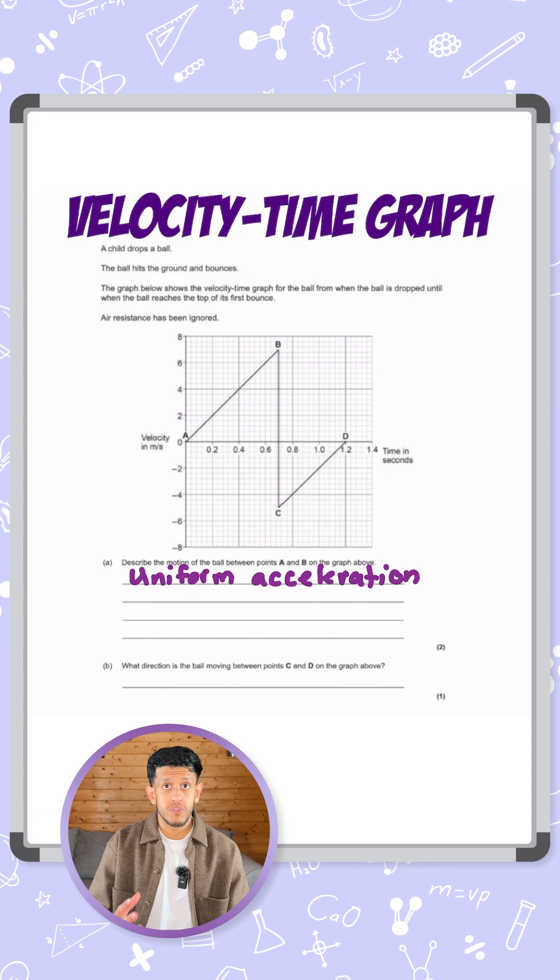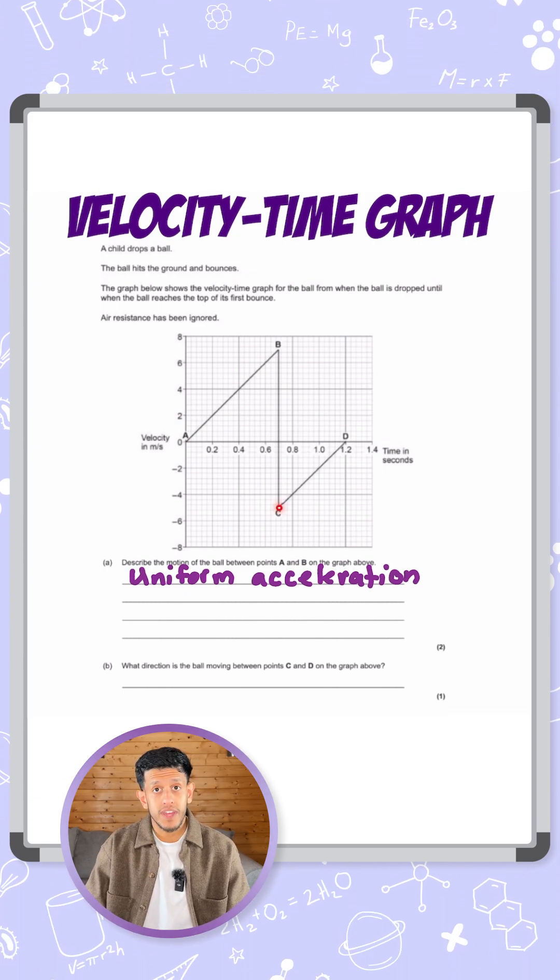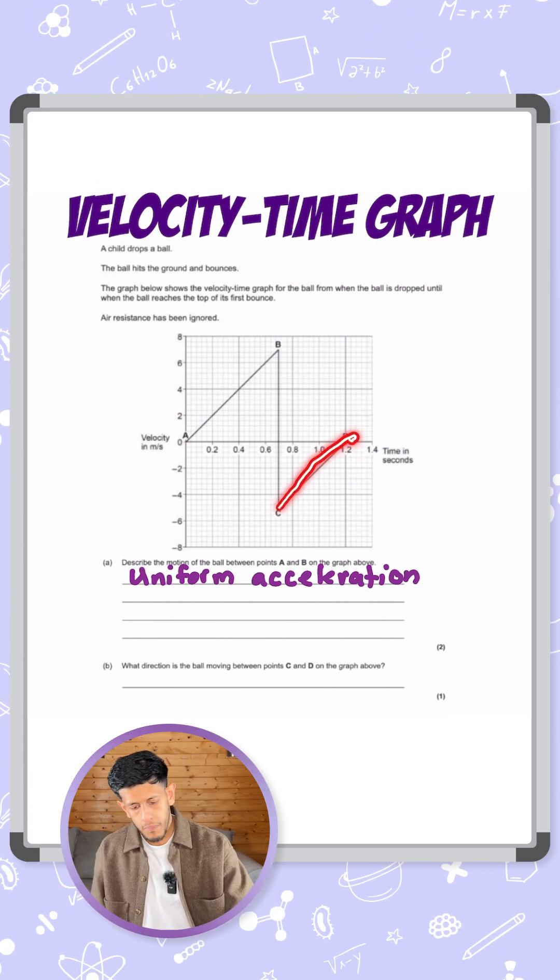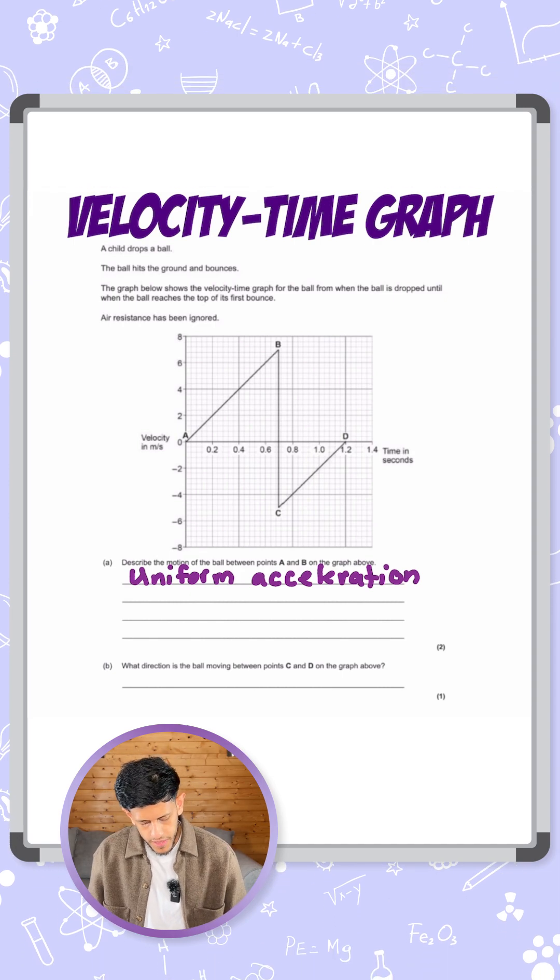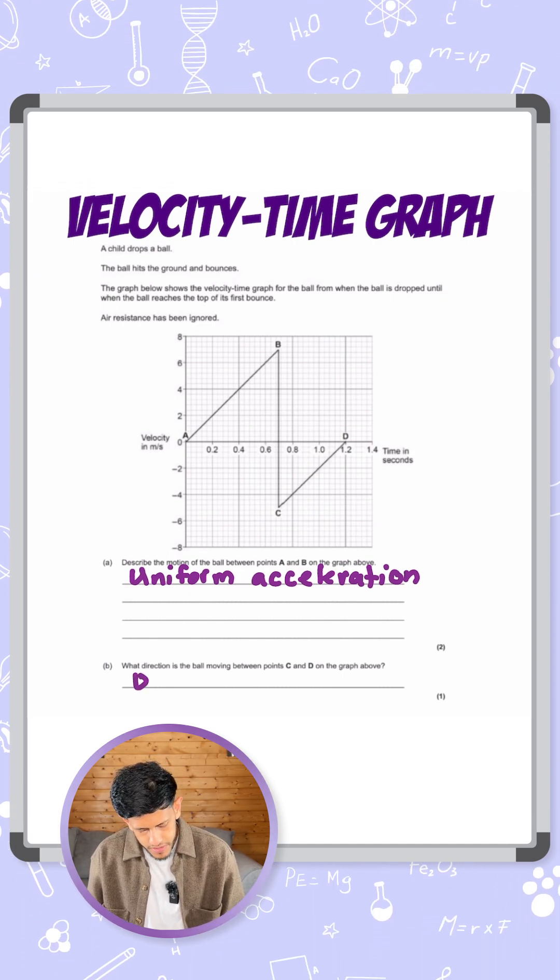So that last position or that last movement from C to D was when it was at the ground and it's now bouncing up. So for one mark, the direction that the ball is moving is upwards. And there we have it.